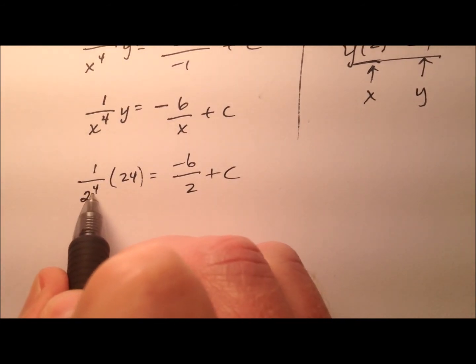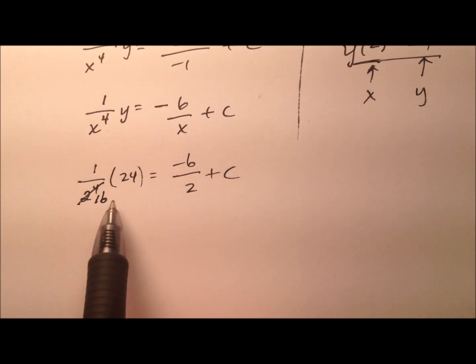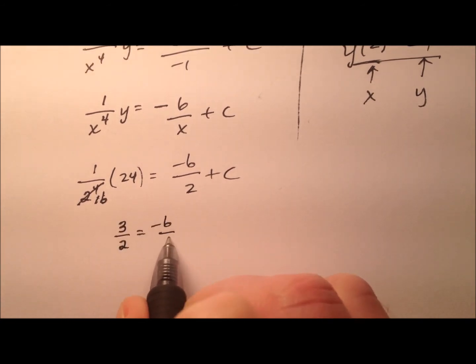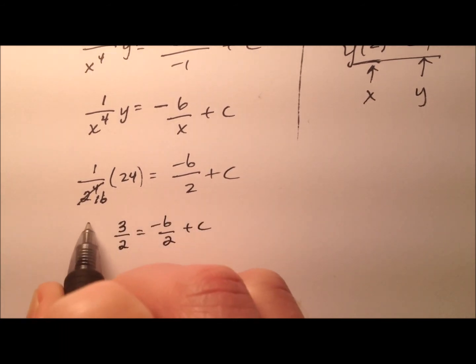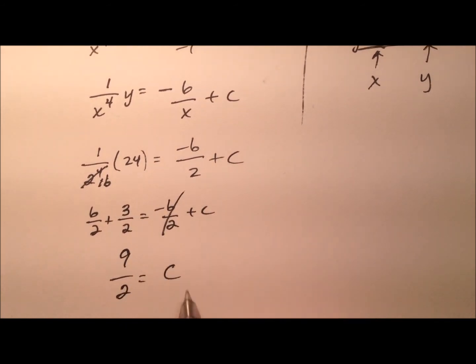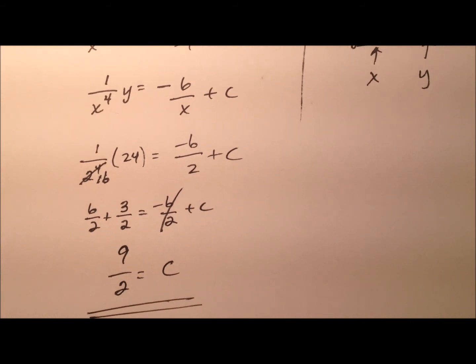So 1 over 2 to the 4th times 24 equals negative 6 over 2 plus c. Well, 2 to the 4th is going to be 16. And then 24 over 16, I can actually divide an 8 out of both of those. So I have 3 halves equals negative 6 halves plus c. So when I add 6 halves to both sides, it looks like my value of c is going to be 9 halves.